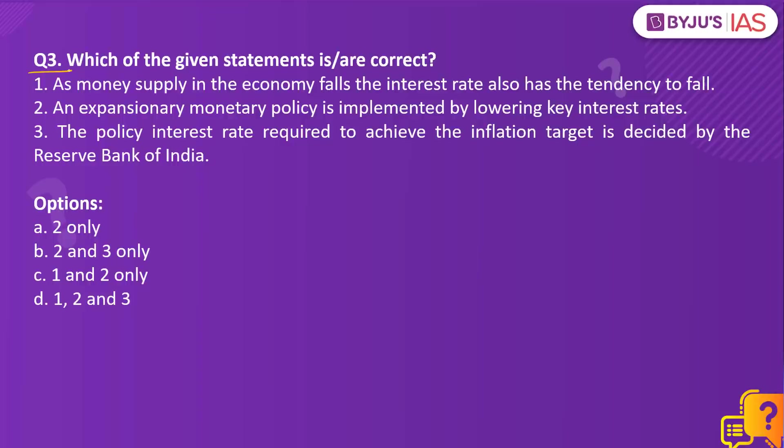Which of the given statements is or are correct? Statement 1: As money supply in the economy falls, the interest rate also has the tendency to fall. Statement 2: An expansionary monetary policy is implemented by lowering the key interest rates. Statement 3: The policy interest rate required to achieve the inflation target is decided by the Reserve Bank of India.